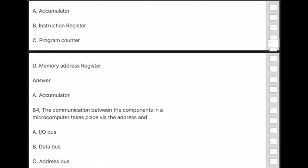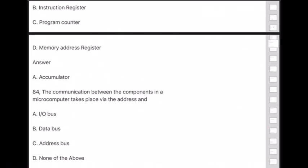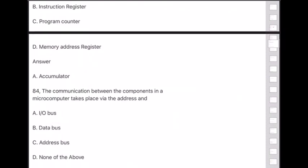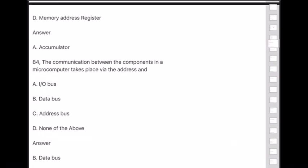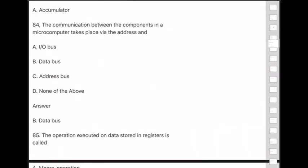Question 84: The communication between the components in a microcomputer takes place via the address and — answer is option B — data bus.